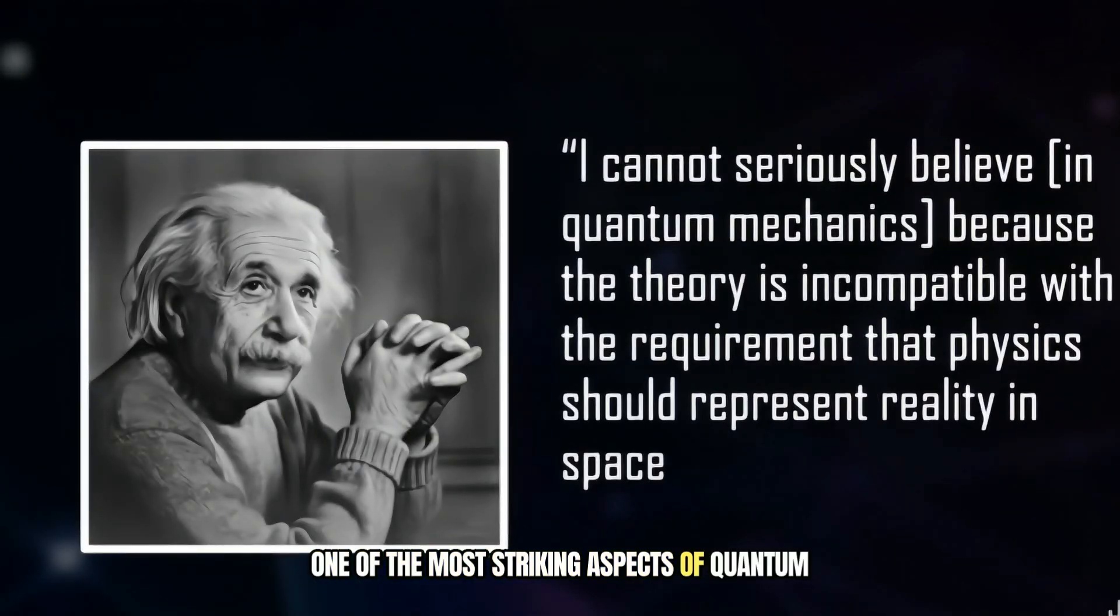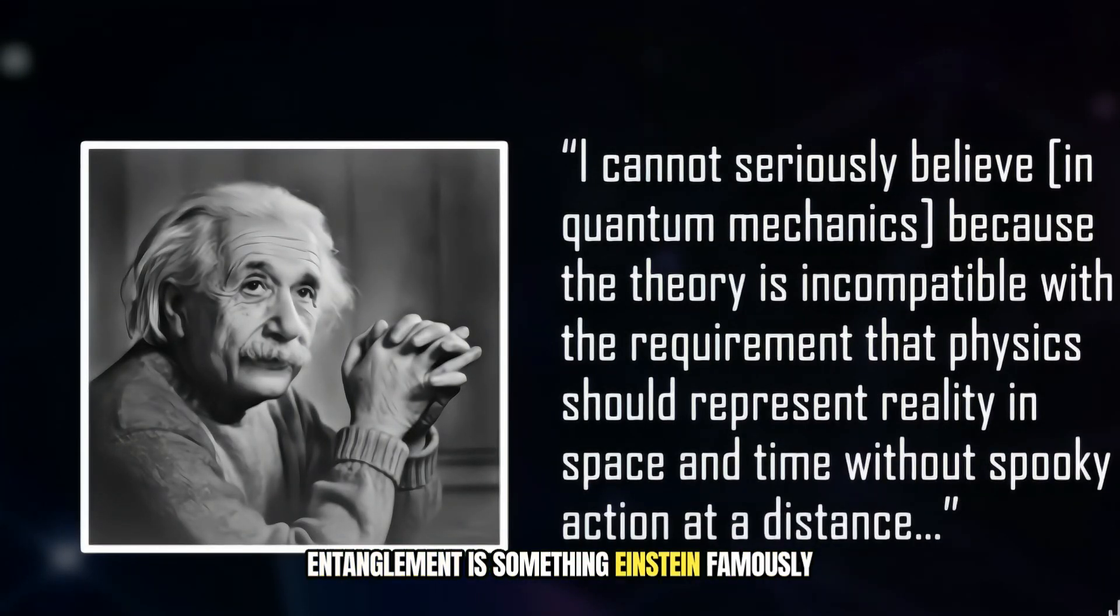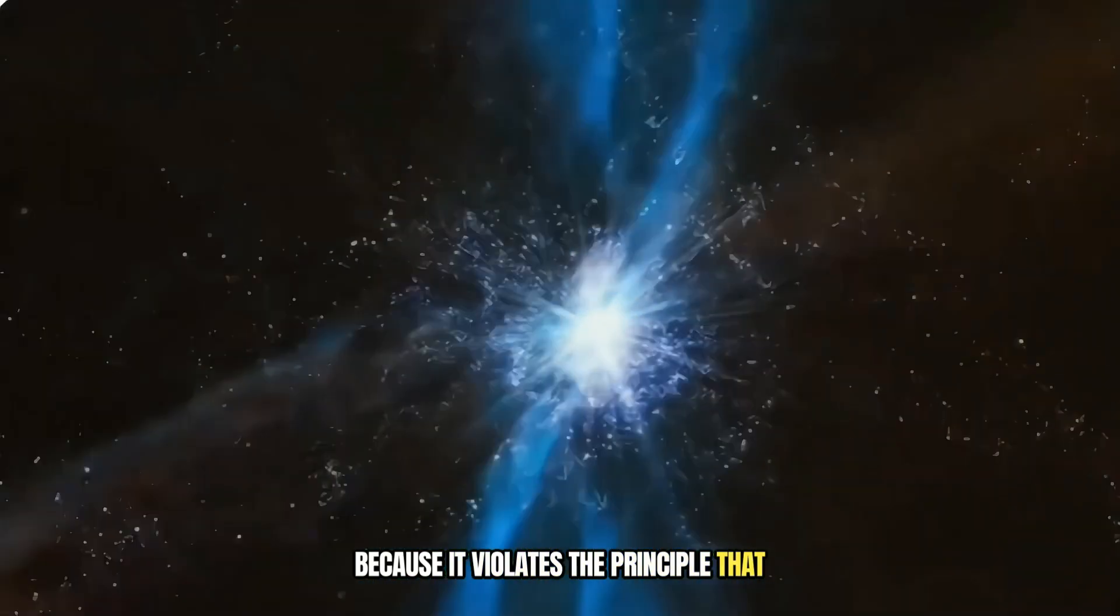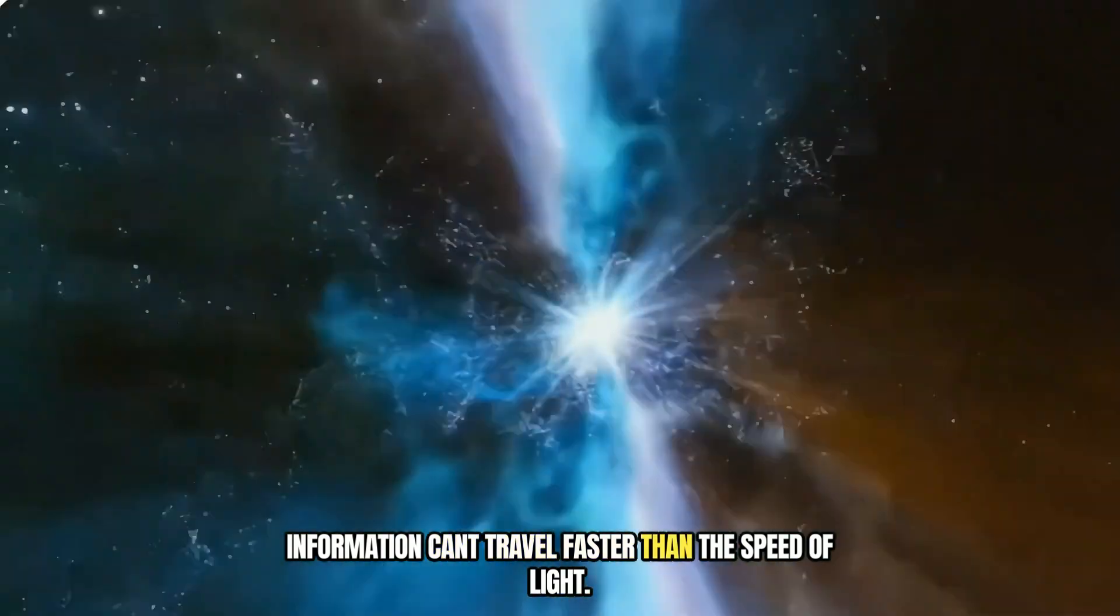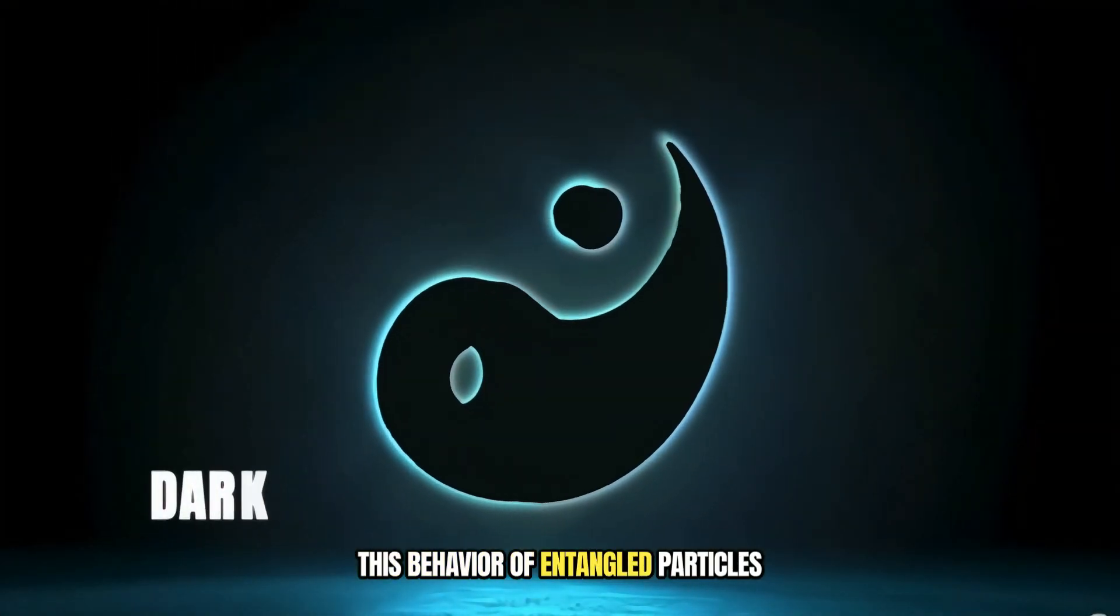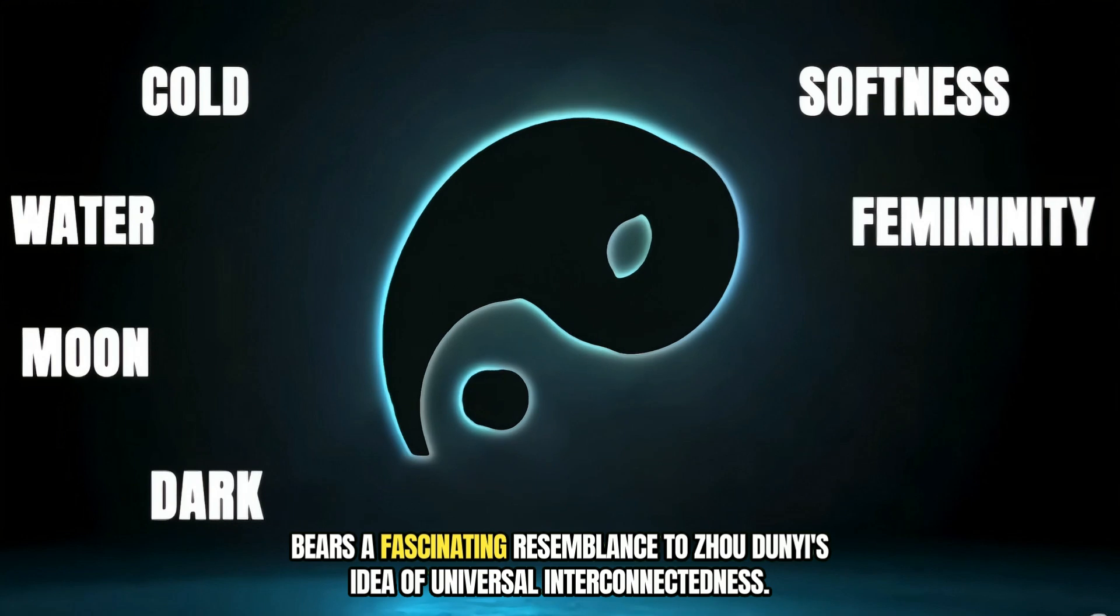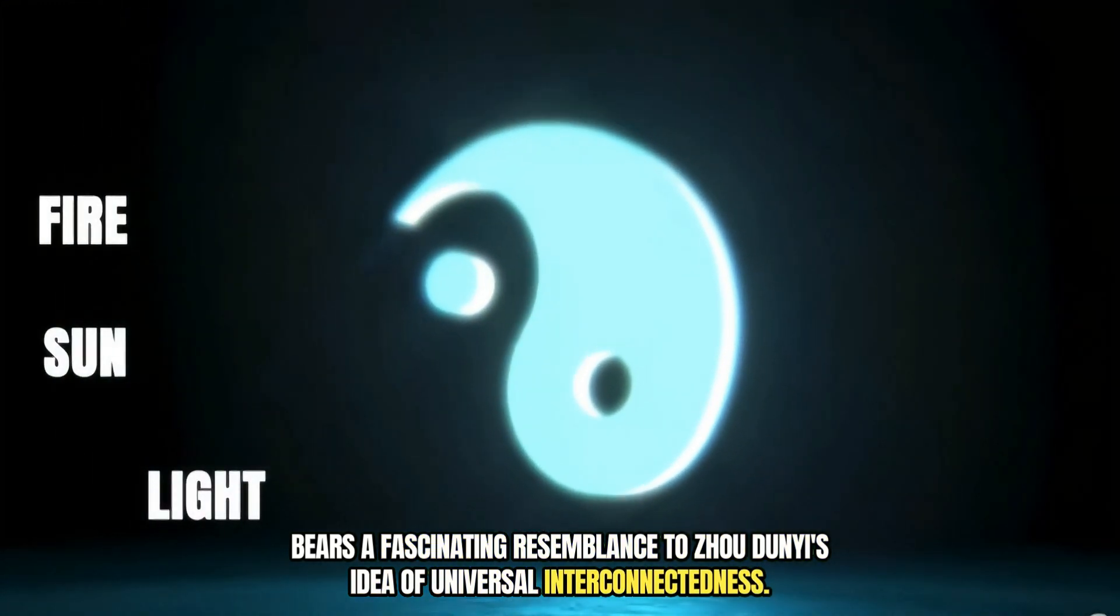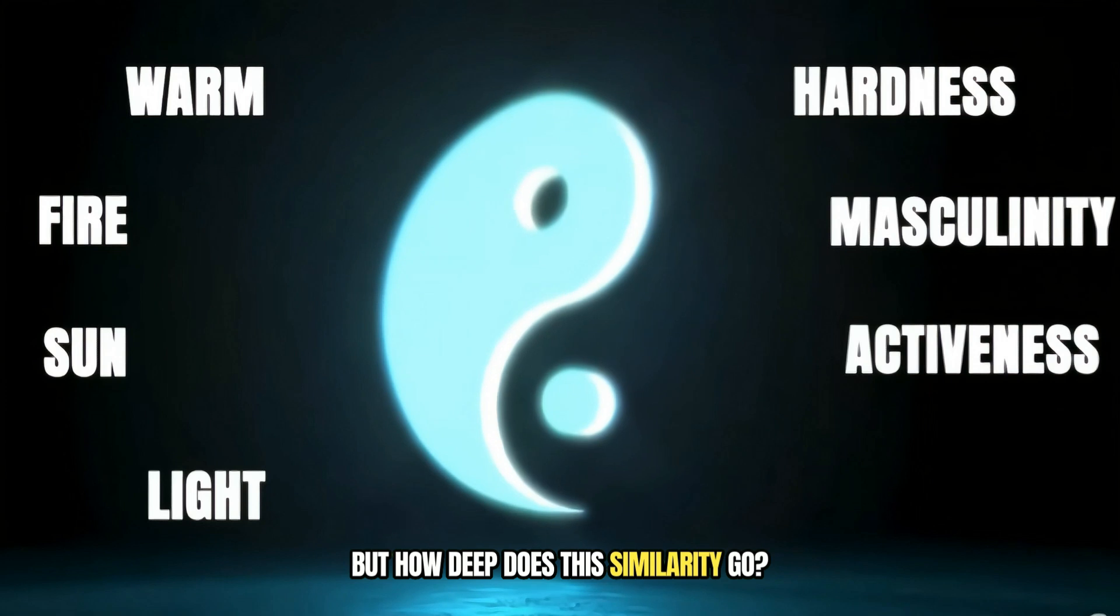One of the most striking aspects of quantum entanglement is something Einstein famously referred to as spooky action at a distance, because it violates the principle that information can't travel faster than the speed of light. This behavior of entangled particles bears a fascinating resemblance to Zhou Dunyi's idea of universal interconnectedness. But how deep does this similarity go?